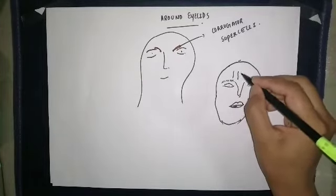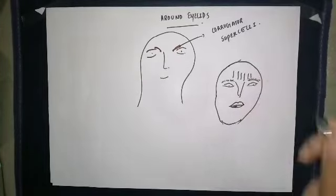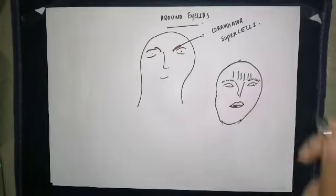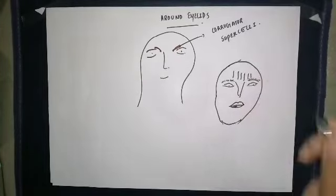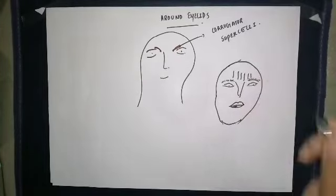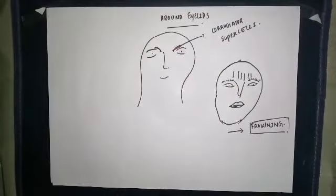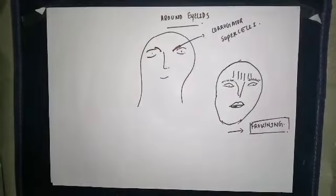The action of the corrugator supercilii is to create vertical lines in the forehead. This occurs during the frowning expression. So the contraction of the corrugator supercilii muscle is associated with frowning.